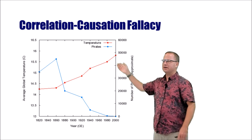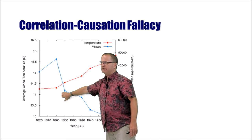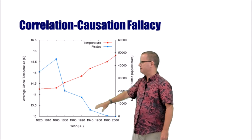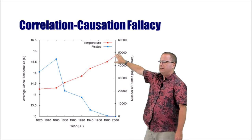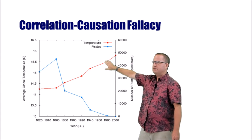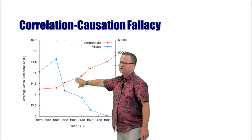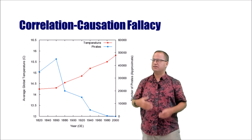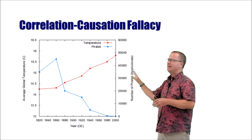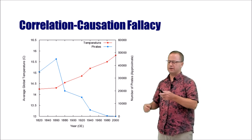There's probably a third variable accounting for both trends. The industrial revolution in the late 1700s and 1800s caused more carbon dioxide and the rise in global temperature. By the same token, as the economy changed due to the industrial revolution, there was probably less need for pirates. This is just an example of an incorrect cause-and-effect relationship.